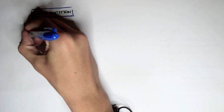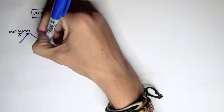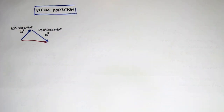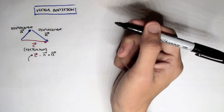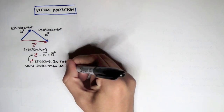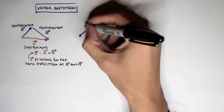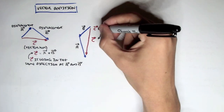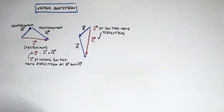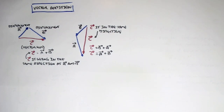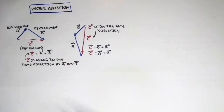Now let's talk about vector addition. As the name implies, it's just adding vectors. If we have displacement a and displacement b, we can draw another displacement c, which we call a vector sum, where c equals a displacement plus b displacement. Note that c displacement is travelling in the same general direction as a and b. We can also write c displacement equals b displacement plus a displacement — it doesn't really matter.